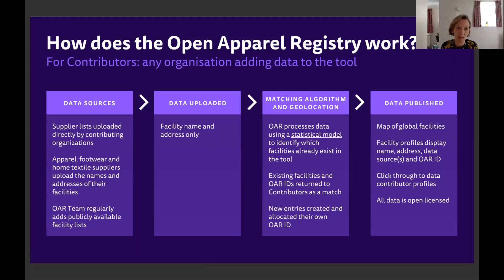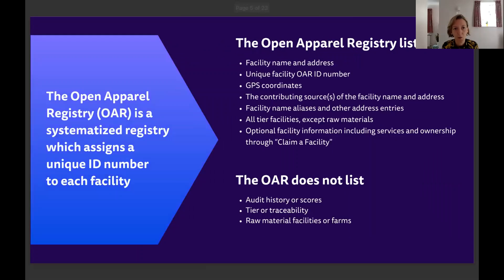All of the data in the Open Apparel Registry is governed under an open data license — a Creative Commons 4.0 license — which means any organization can make use of that data in the OAR for free. The OAR is a systematized registry creating consensus in the way we log and share data, allocating unique IDs to each facility. It's really important to understand what we do and don't list: we list the name and address for each facility.